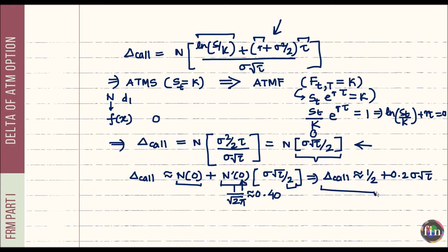This tells us: if an at-the-money forward option has small volatility and small residual time to maturity, the approximation that delta ≈ 0.5 is quite reasonable.